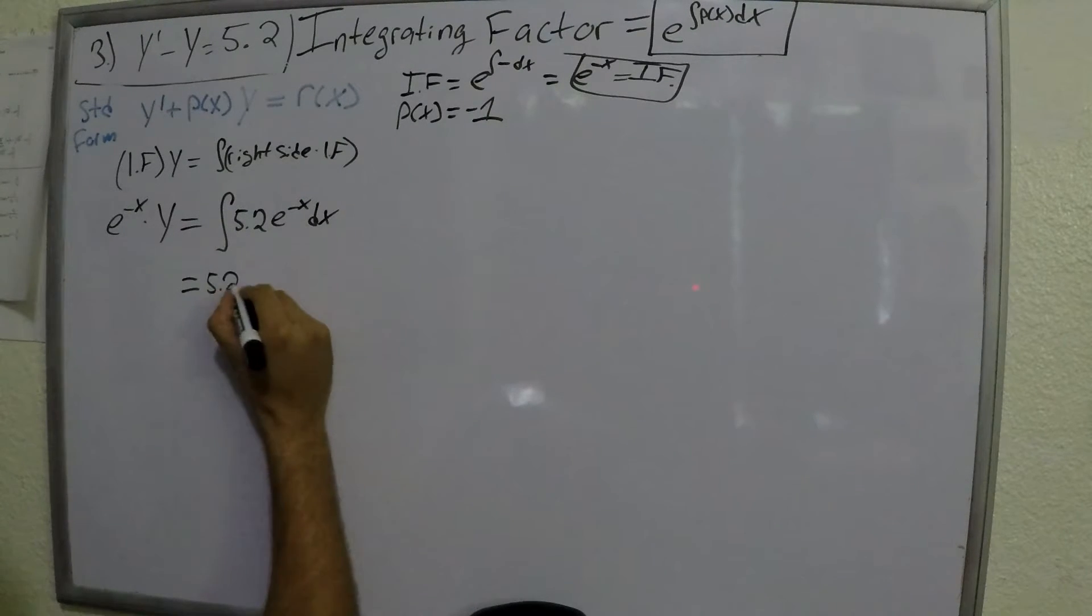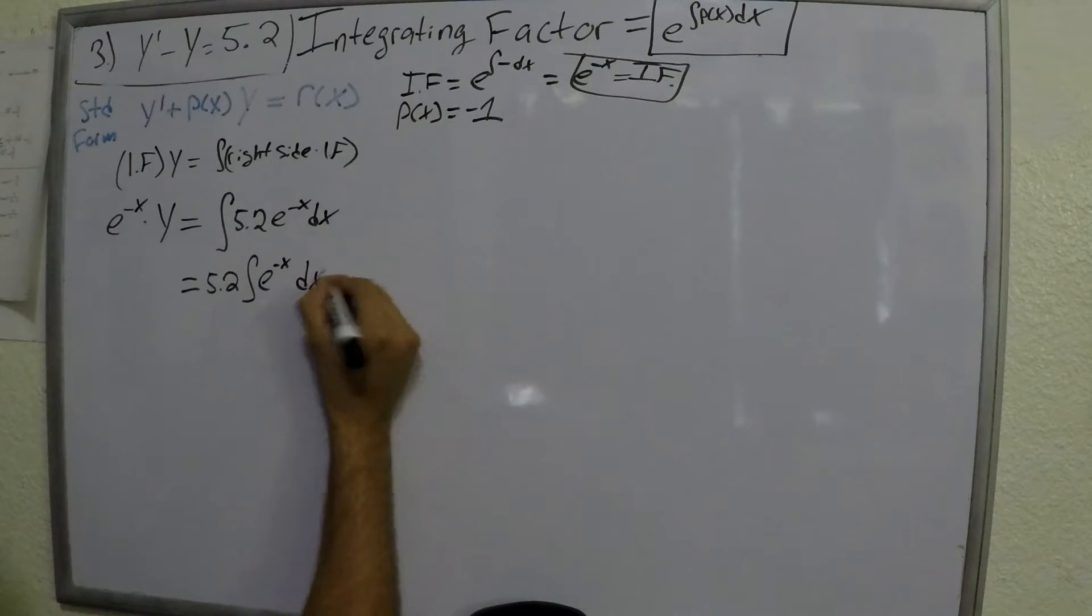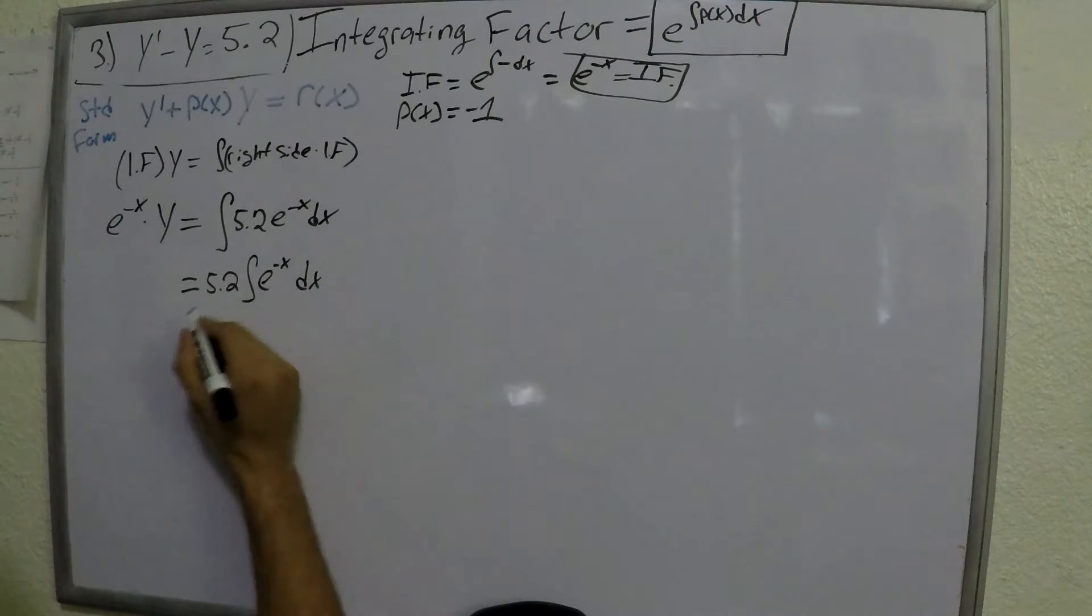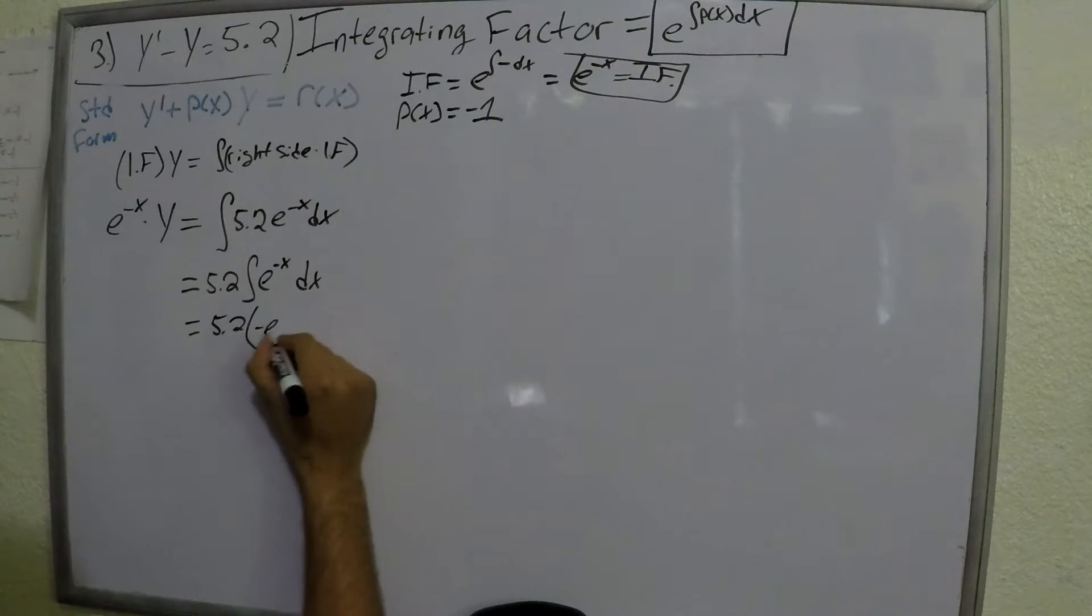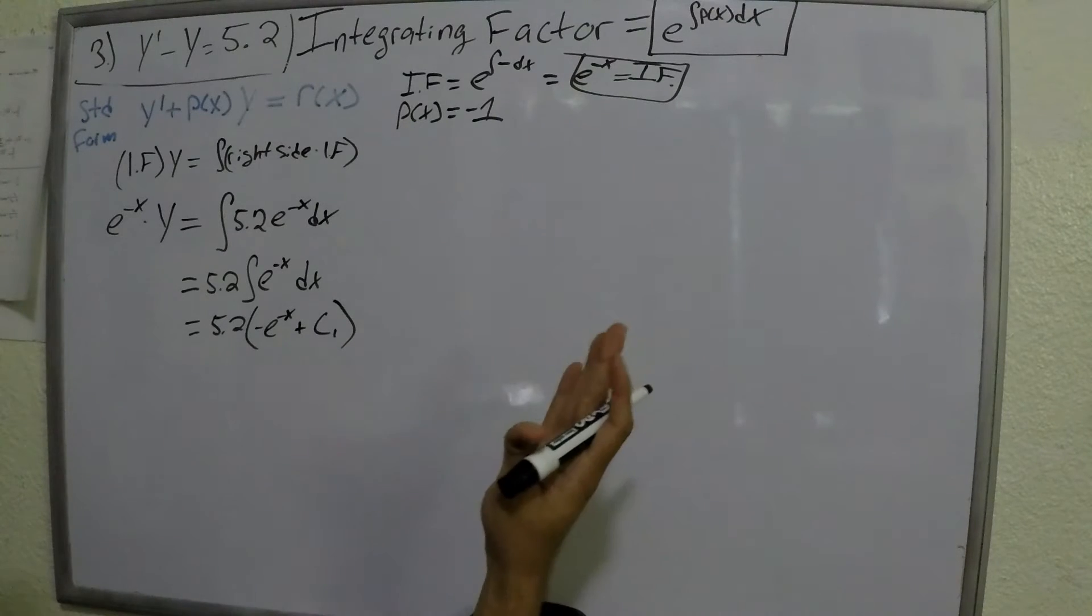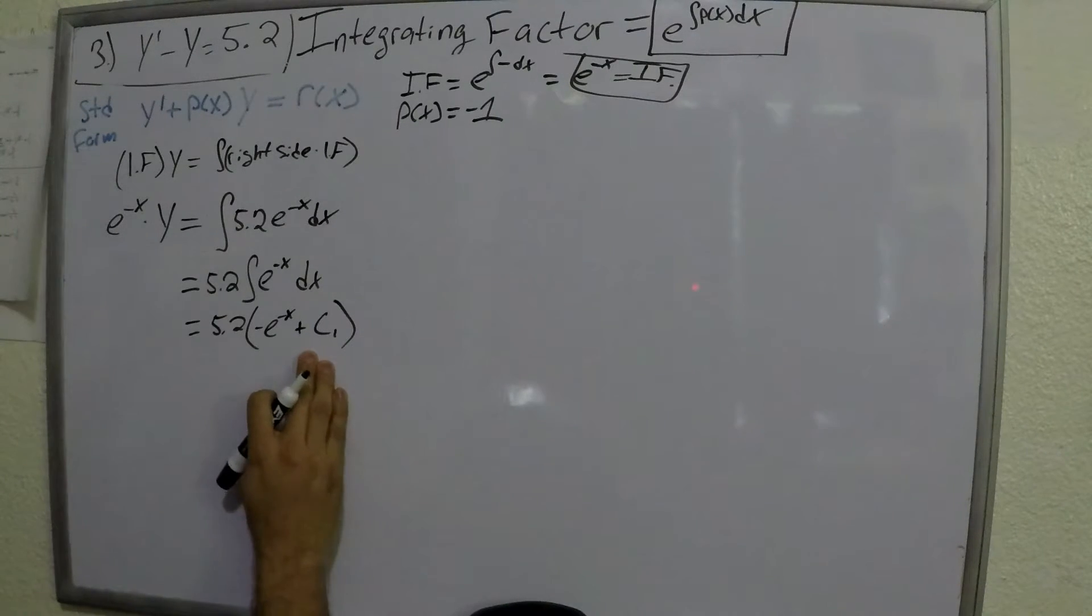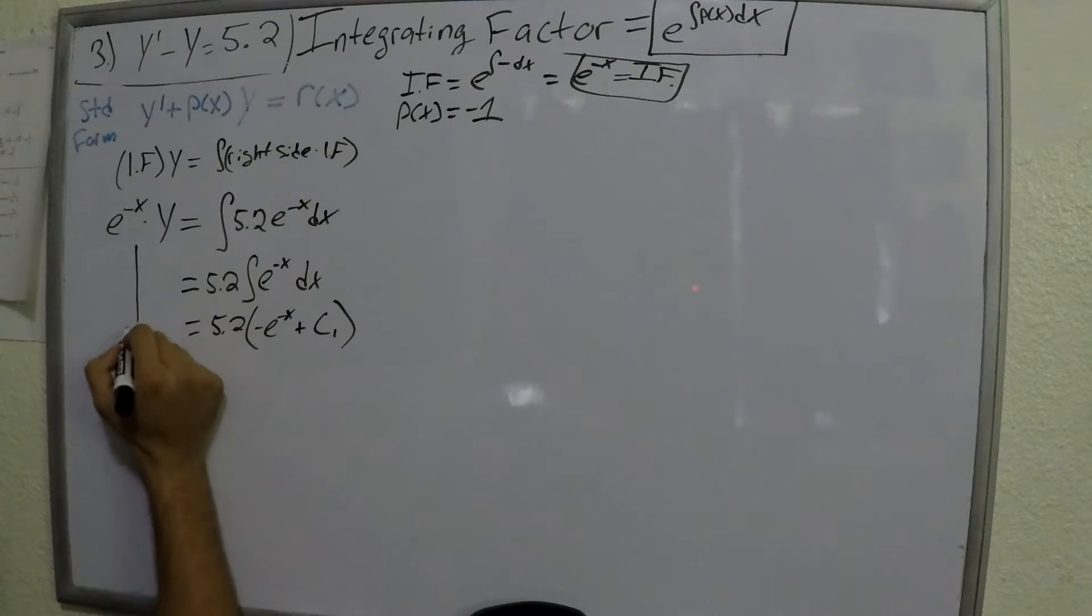Now, let's go ahead and evaluate this integral on the right side. Fairly straightforward. The 5.2 comes out because it is a constant, leaving us with just this. Now, e to the x, the integral and the derivative is e to the x. But 5.2 times negative e raised to the negative x plus c, as we know. We'll call that c1. Constant, it's any number. We're looking for the general solution. So it is going to have some constant, or it's going to have c representing every constant known to man.